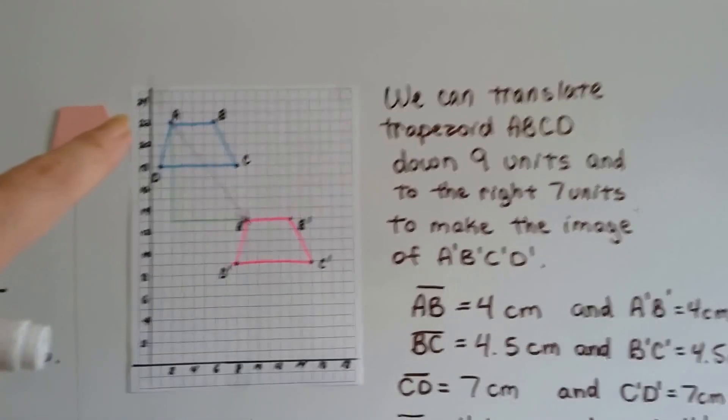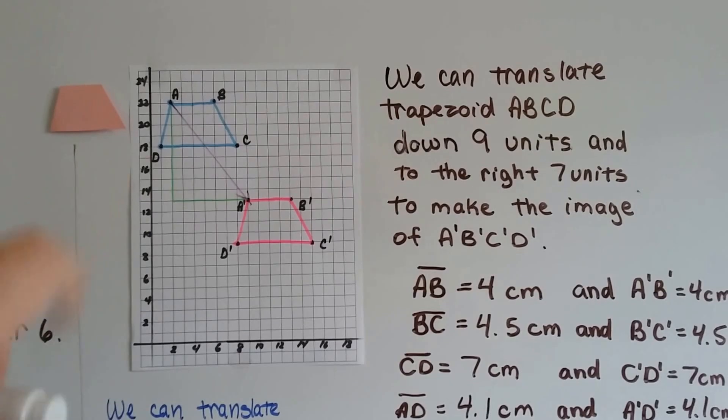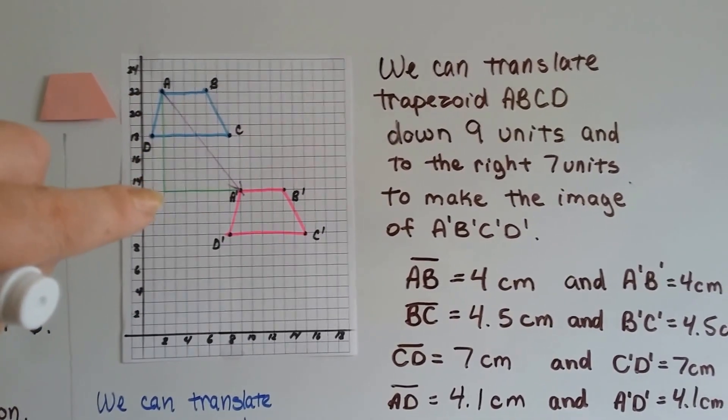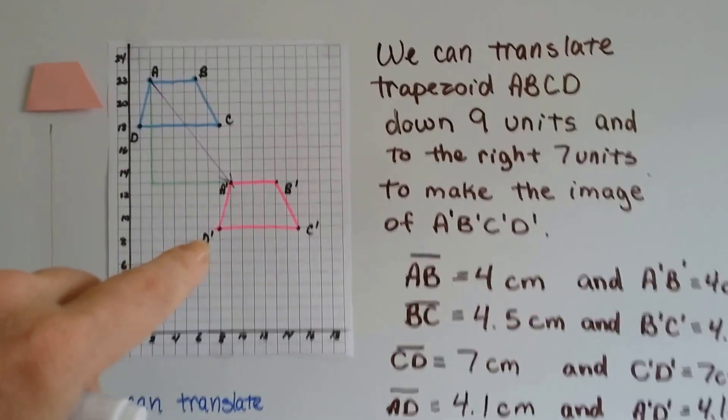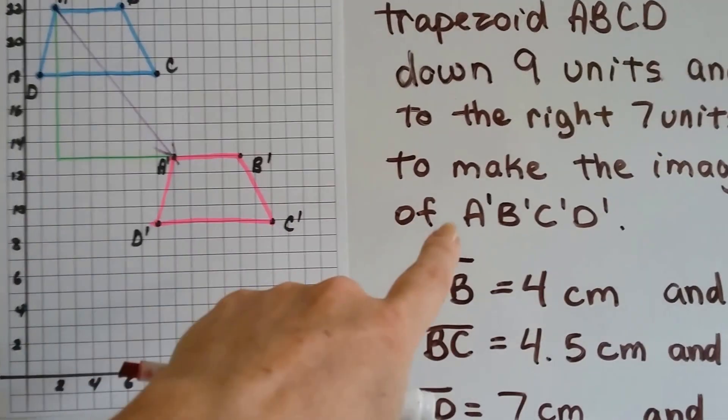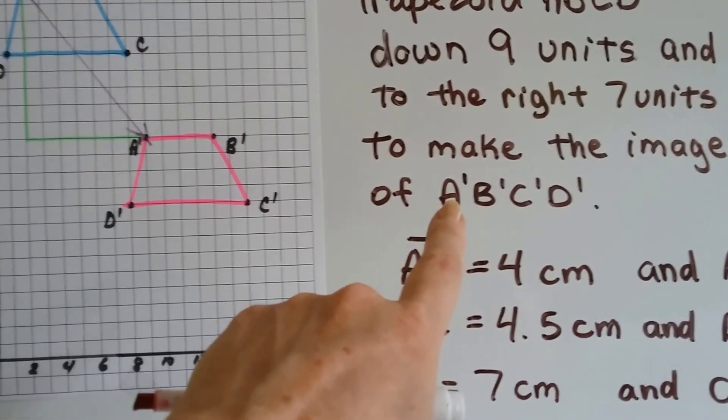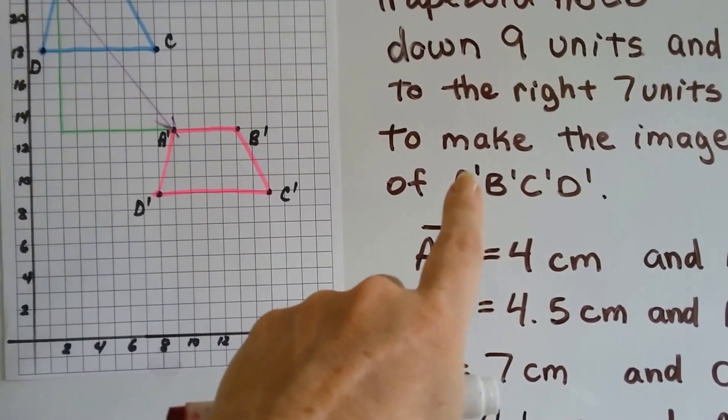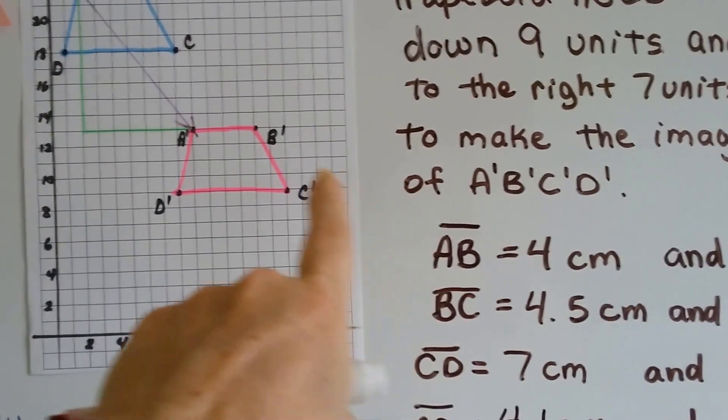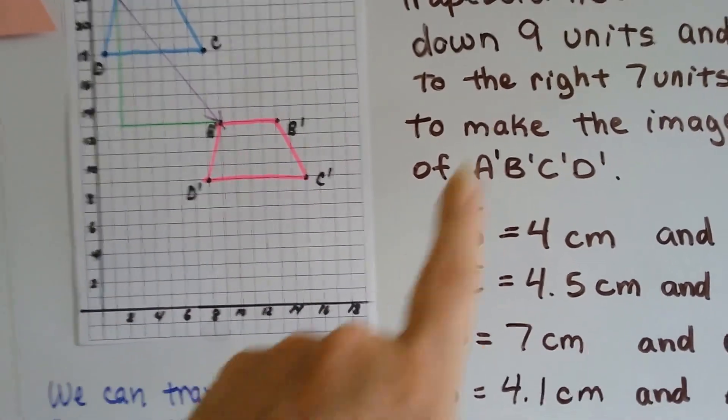We can translate trapezoid ABCD down 9 units and to the right 7 units to make the image. The way we say this with the little tick marks, these aren't ones. As I said before, these little tick marks are primes. So we say A prime, B prime, C prime, D prime.